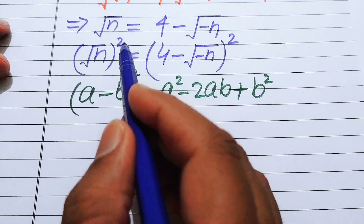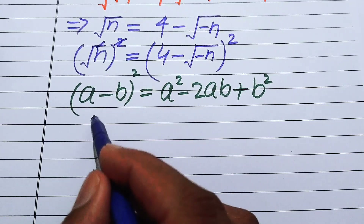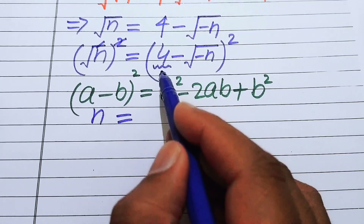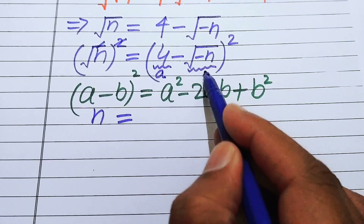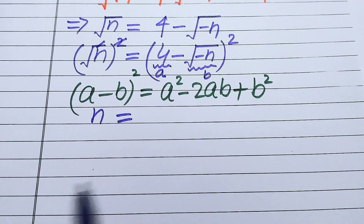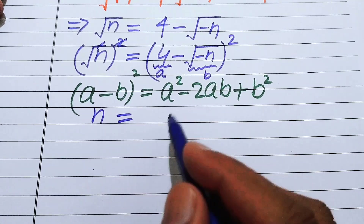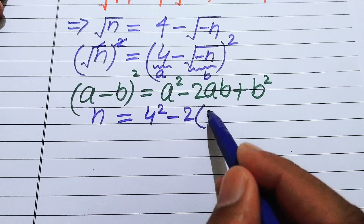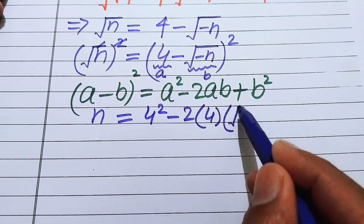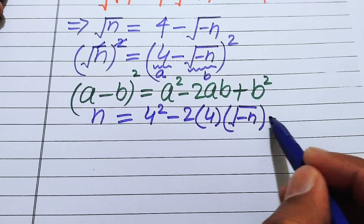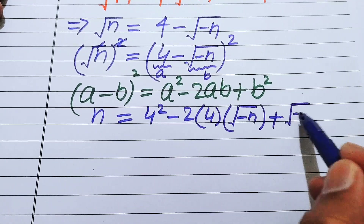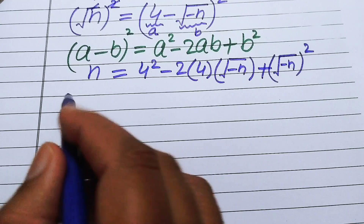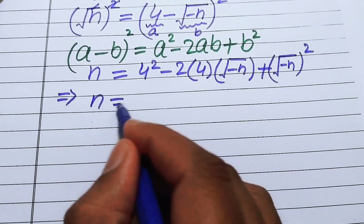On the left hand side the square and square root cancel, giving us n. We open the formula with a = 4 and b = √(−n), so we get: n equals 4 squared minus 2 times 4 times √(−n) plus (√(−n)) squared.